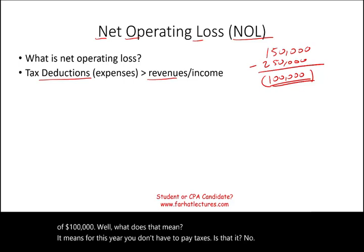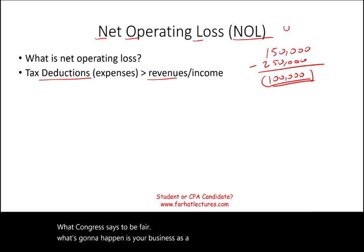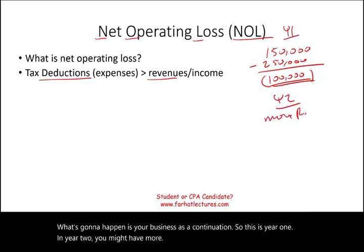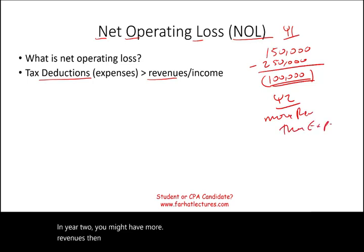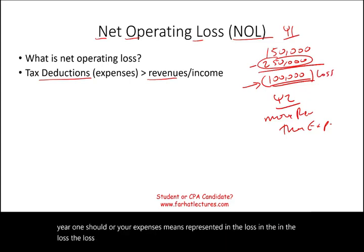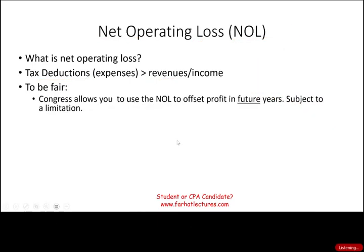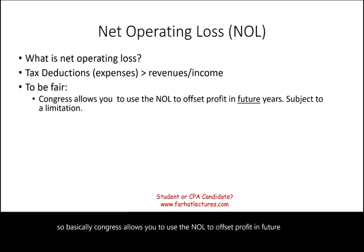What Congress says, to be fair, is that your business is a continuation. So this is year one. In year two, you might have more revenues than expenses. Congress says your expenses represented in the loss — the loss of $100,000, your excess expenses of $100,000 — should be used in year two, because the company is a continuation. Otherwise, you don't want to lose your deduction. So basically, Congress allows you to use the NOL to offset profit in future years, obviously subject to limitation.